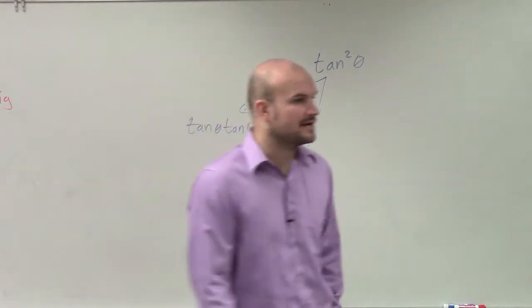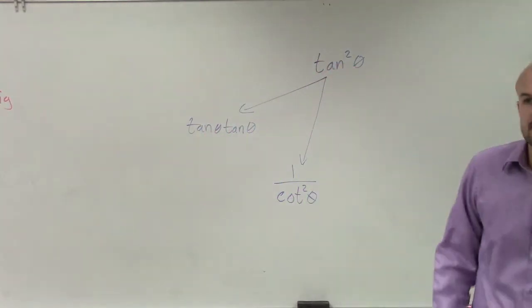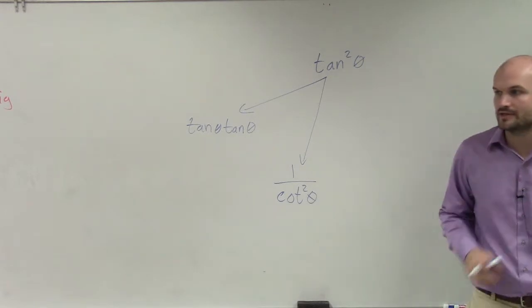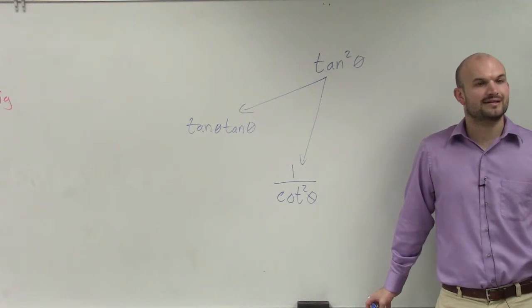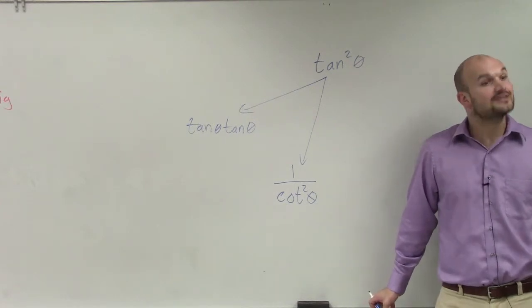What else is another way I could rewrite them? Anybody else wants to give it a shot? Yes, Jamie. Tell me what kind. Sine over cosine. What kind of sine over cosine? Squares. Squares, right?